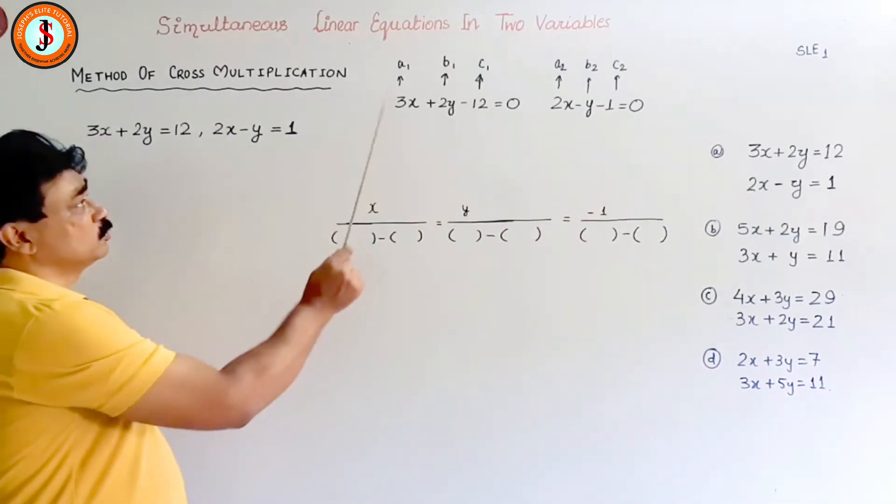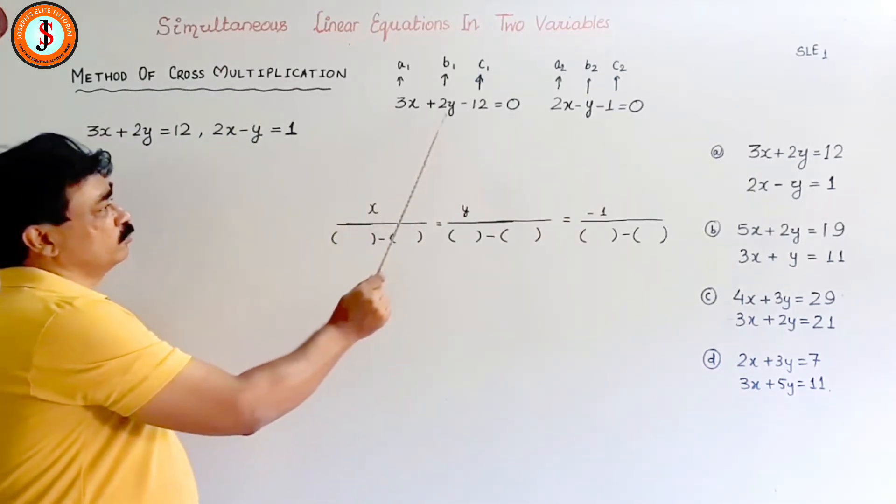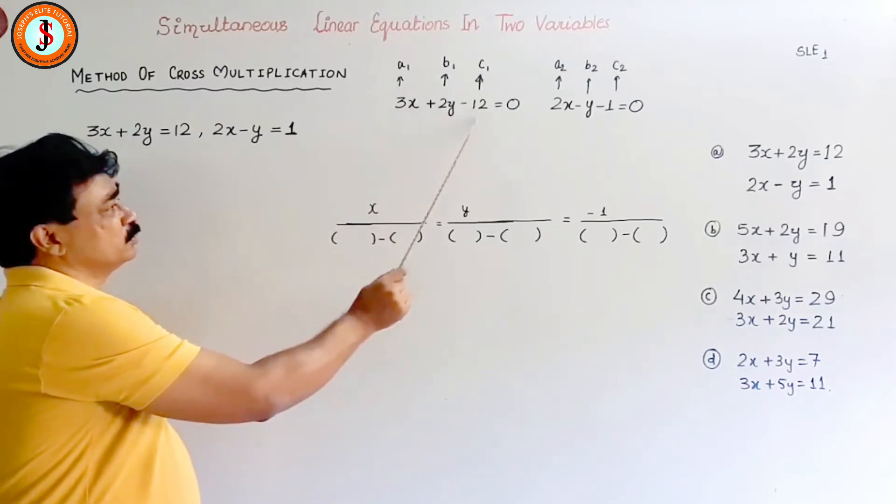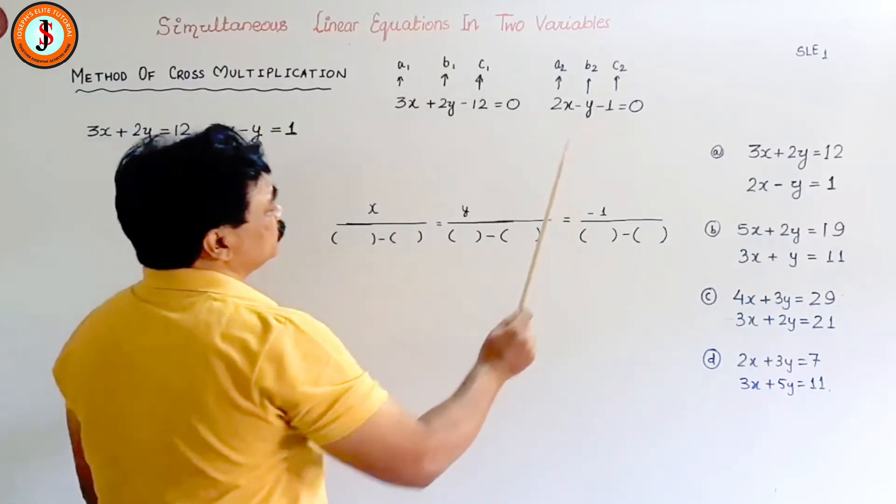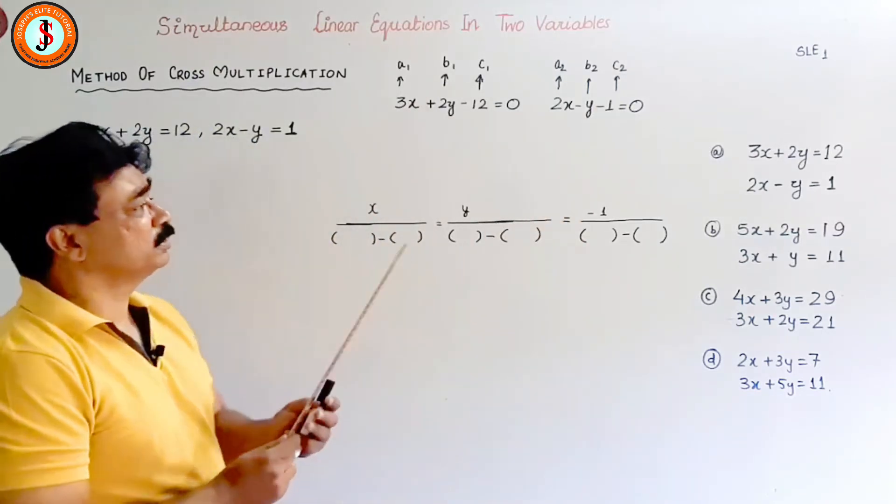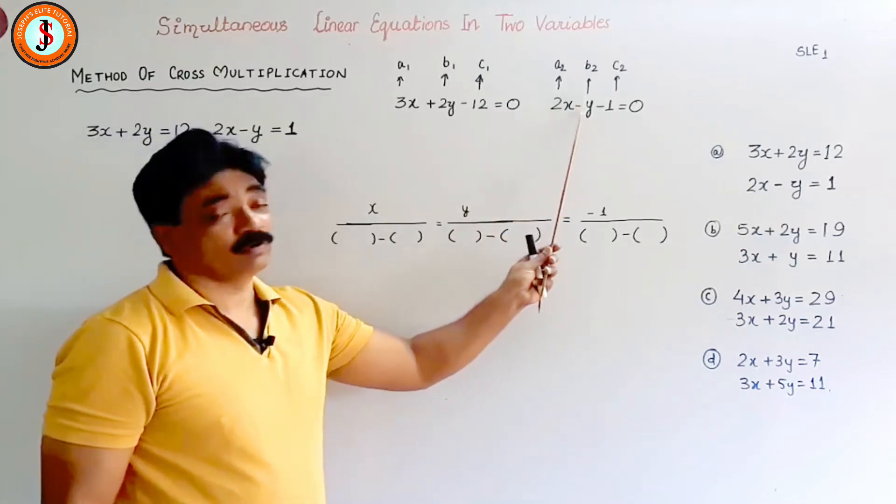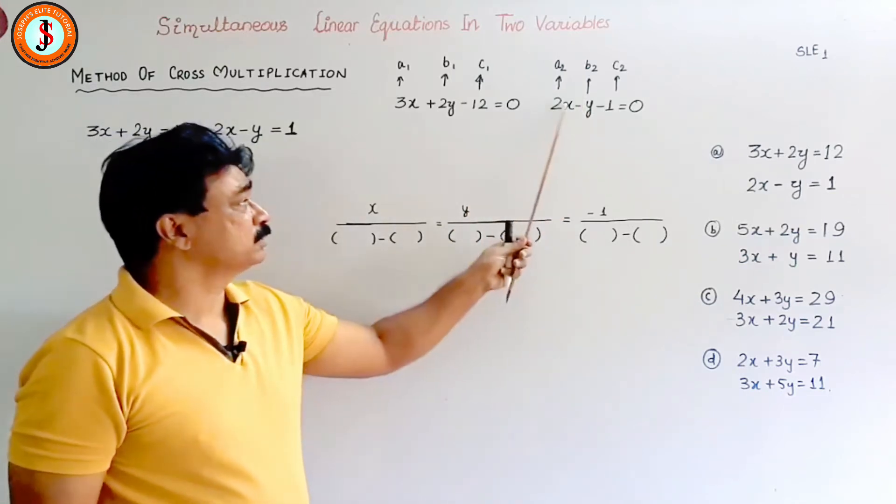Now also remember, coefficient of x is called a, coefficient of y is b, and coefficient of constant is c. So since there are two equations, I have named a1, b1, and c1 for this, and a2, b2, and c2. Also remember, if there is no coefficient, that means there is 1 over there, and coefficient means the sign should be taken into consideration.